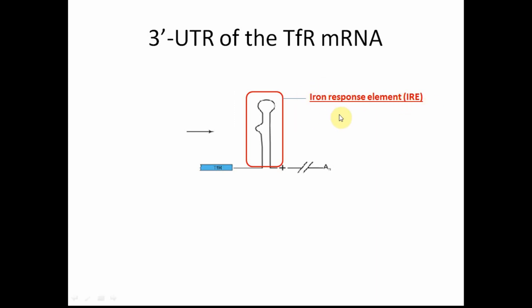The IRE, which is the stem loop structure shown here, contains RNA cleavage sites. So if the IRE isn't protected, the mRNA is susceptible to degradation by RNases naturally present in the cell.